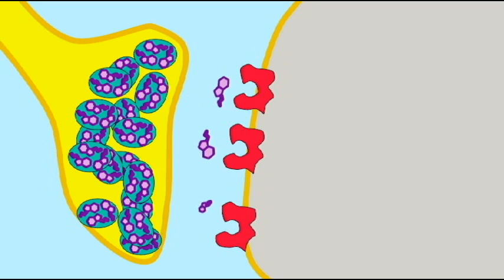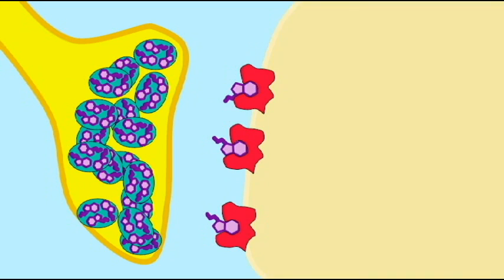Either way, the binding of a neurotransmitter to its receptor can result in electrical changes in the postsynaptic cell and perhaps even an action potential in the postsynaptic cell.